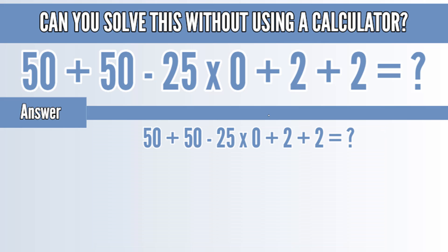According to the BODMAS first we will solve the multiplication which is minus 25 into 0 which gives you minus 0. So the equation becomes 50 plus 50 minus 0 plus 2 plus 2 is equal to question mark.